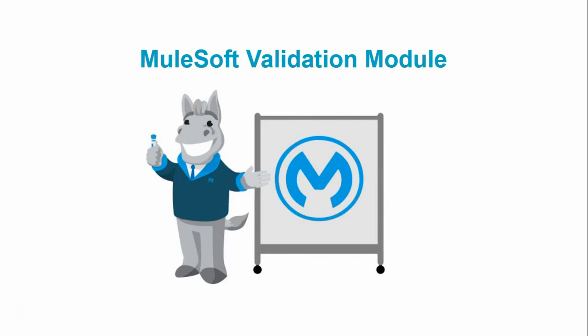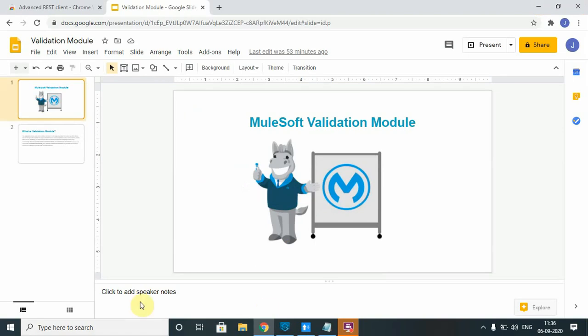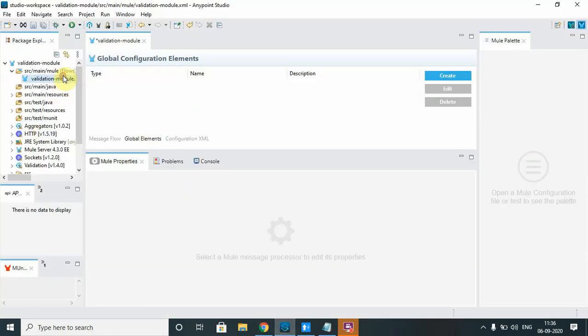Hello dear friends, my name is Jitendra Bafna, I am a senior MuleSoft architect. In the last video we covered the MuleSoft Validation Module Part 1, where we saw various validations: is null, is not null, and is number. In this video we will see validate size, validate IP address, and validate email ID.